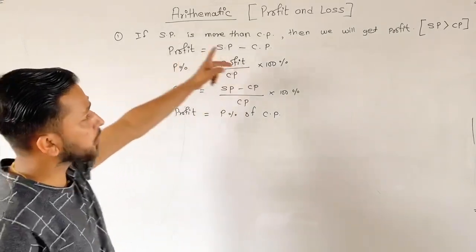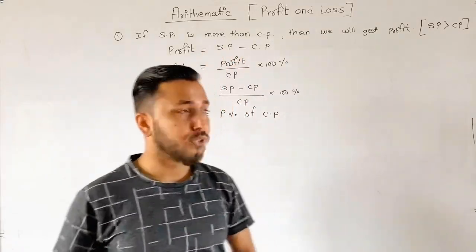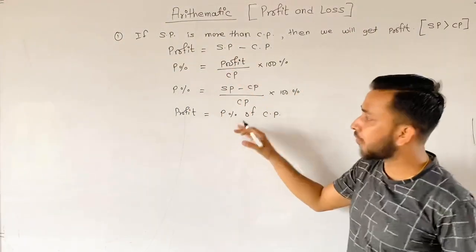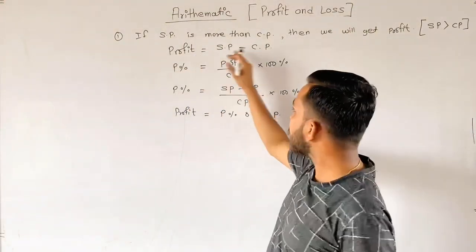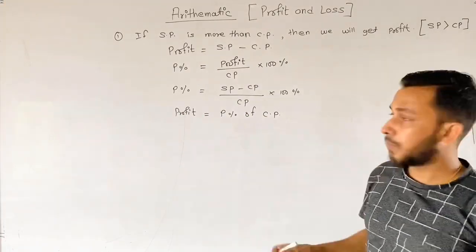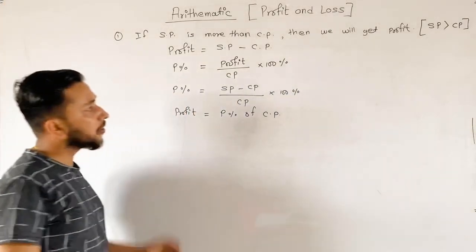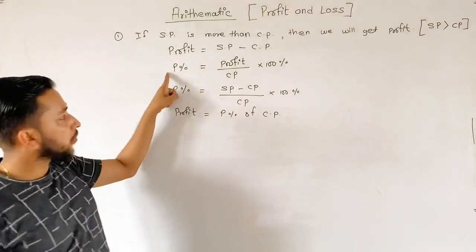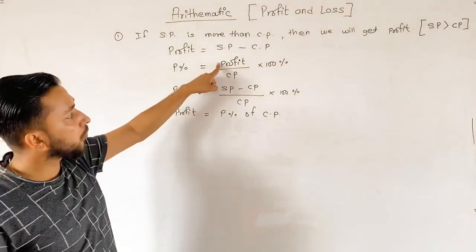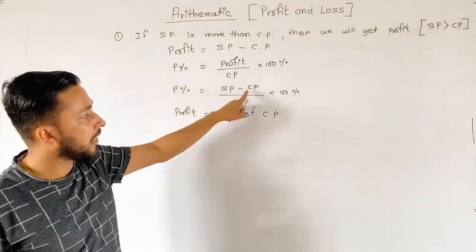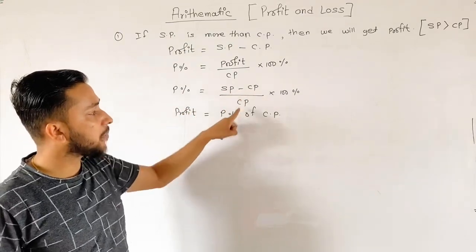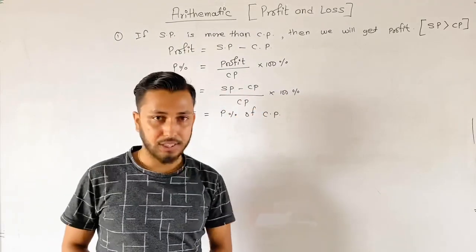Similarly, if SP is greater than CP, then Profit equals SP minus CP. This equals profit percentage of CP. We take Profit percentage as: Profit by CP into 100%. The condition of profit is SP minus CP, so profit percentage equals SP minus CP by CP into 100%.